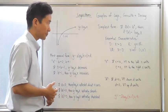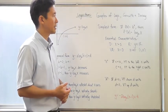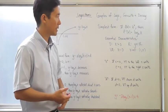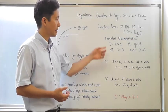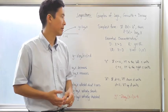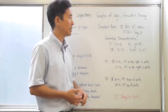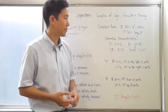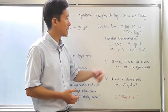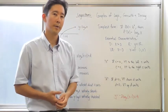Some essential characteristics of this particular function — y is equal to log base b of x — are that the domain is going to be x has to be greater than zero. The range is going to be y as an element of all real numbers. There's going to be a vertical asymptote at x equal to zero, and there's going to be an x-intercept at one comma zero.